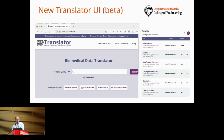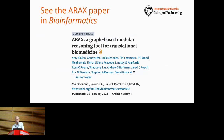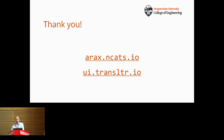The Translator consortium has released a beta version of a user interface through which you can query not just ARAX but all six reasoning agents. We recently published an open access paper on ARAX in the journal Bioinformatics, which provides a lot more details about how ARAX works and what it can do. If you want to try out ARAX, you can use it at arax.ncats.io, and if you want to try out the new Translator-wide user interface, you can find it at ui.translator.io.